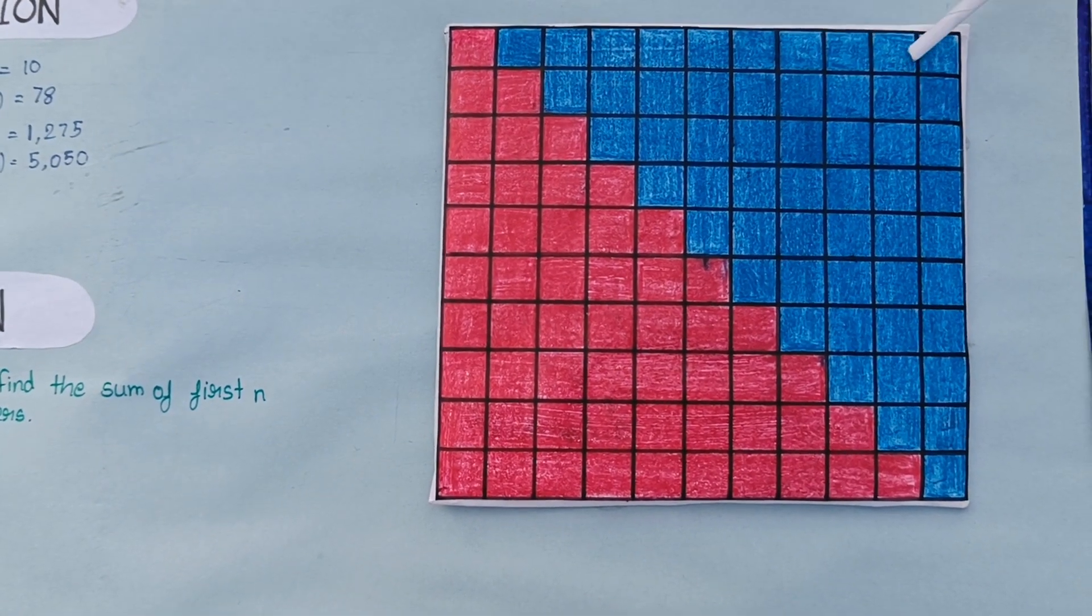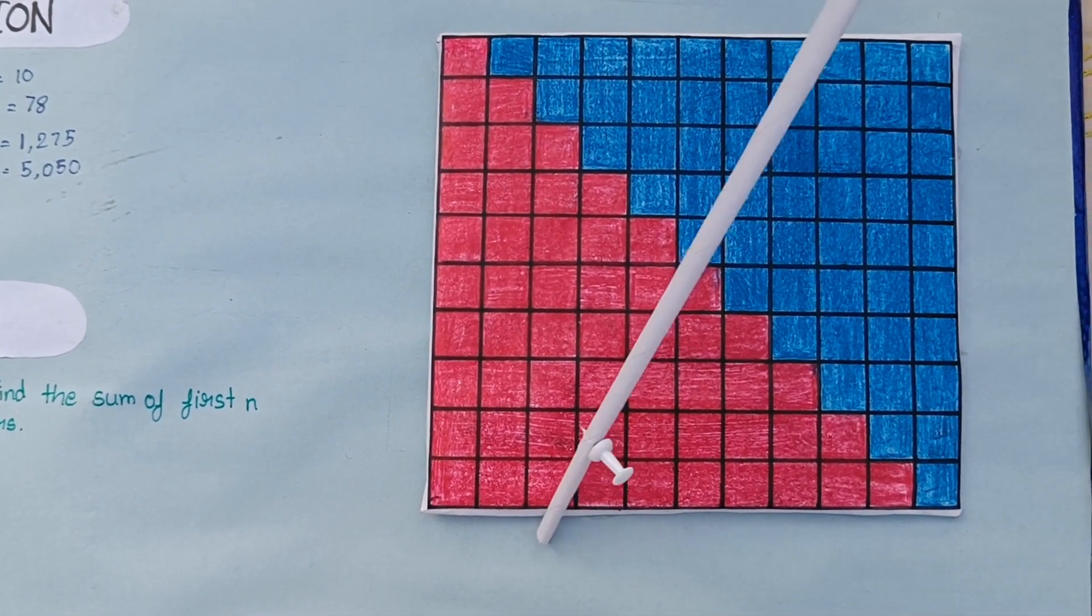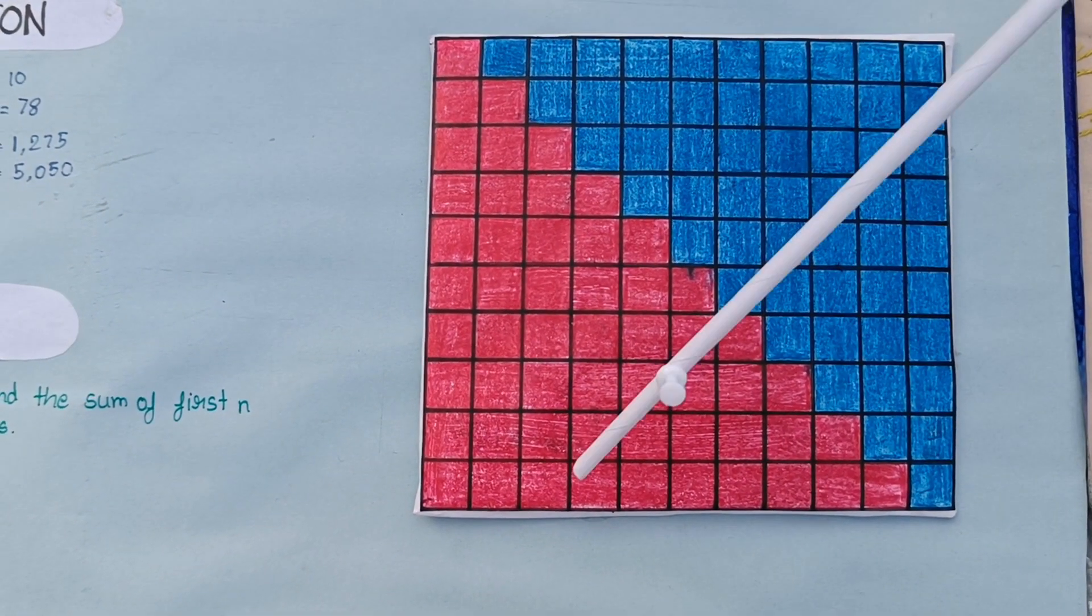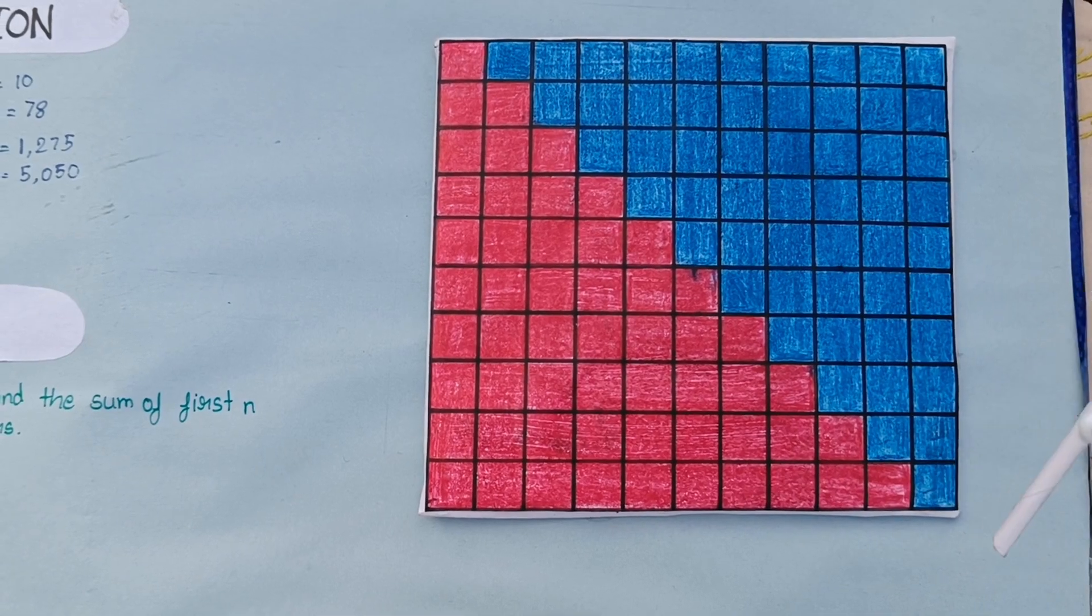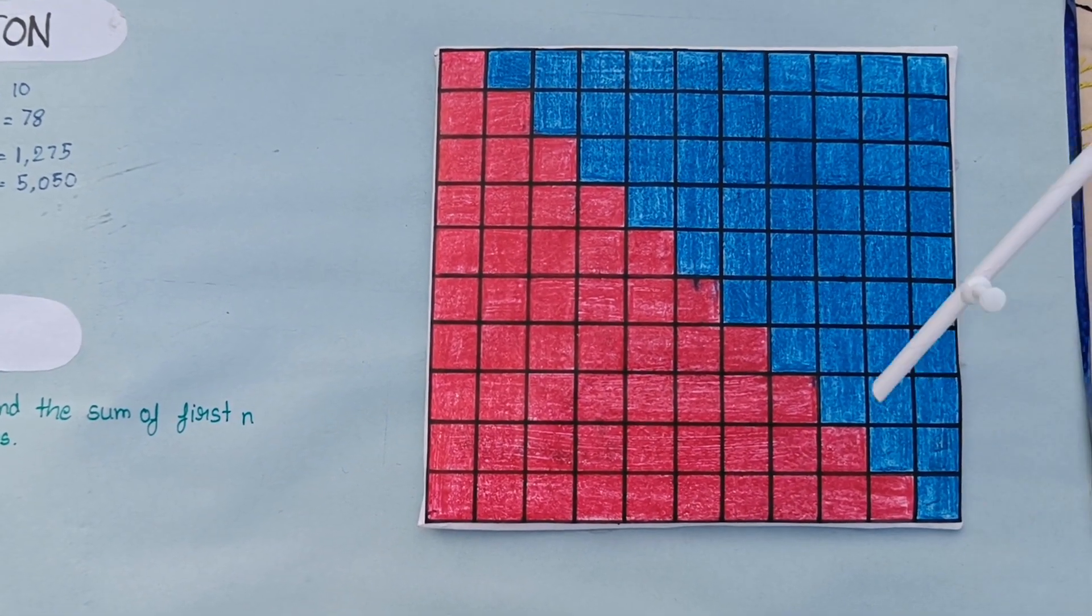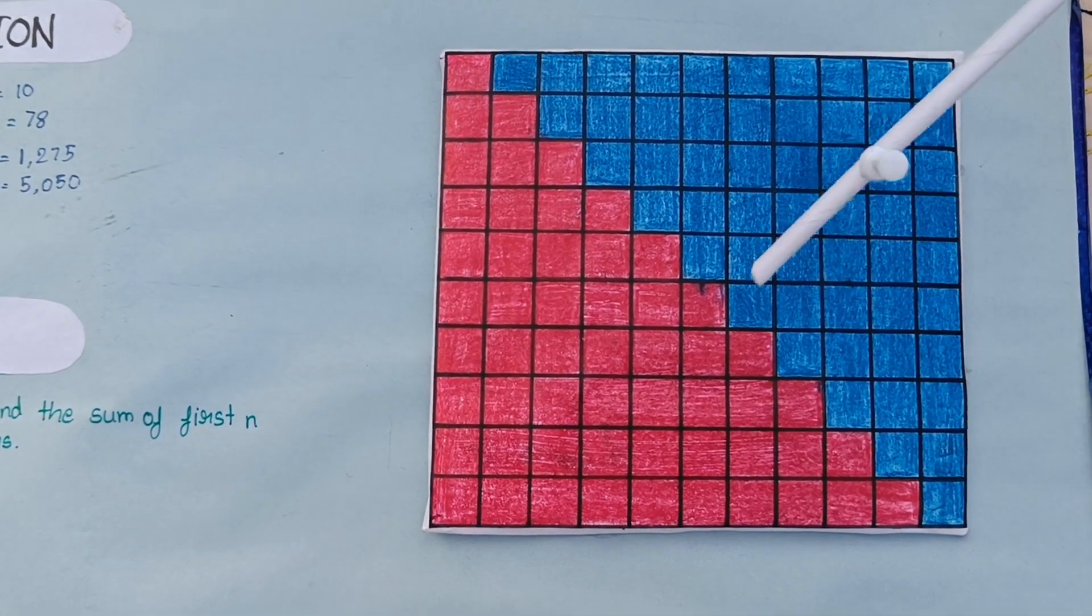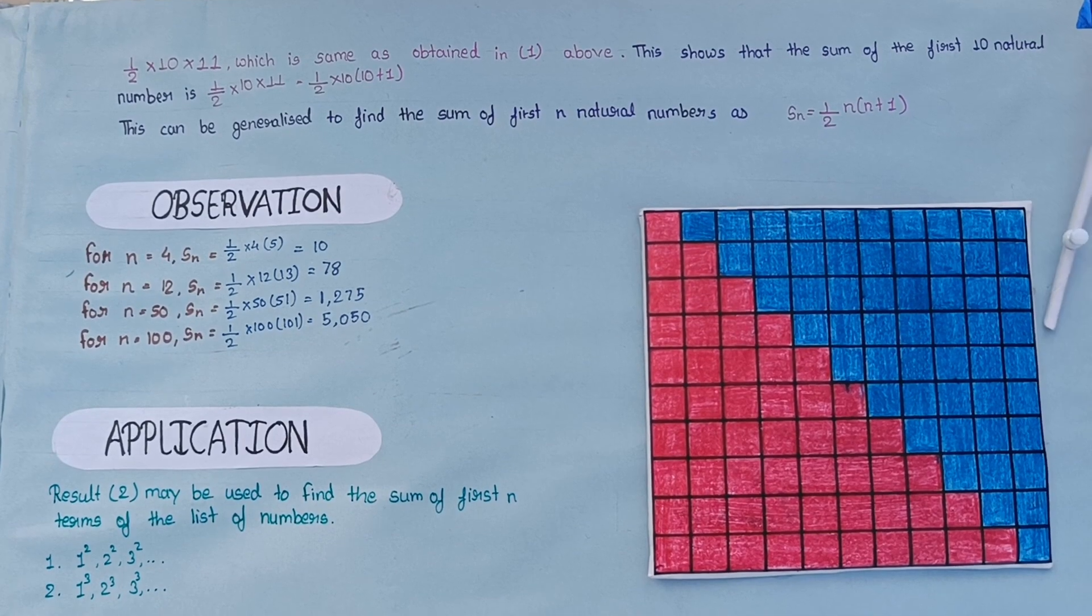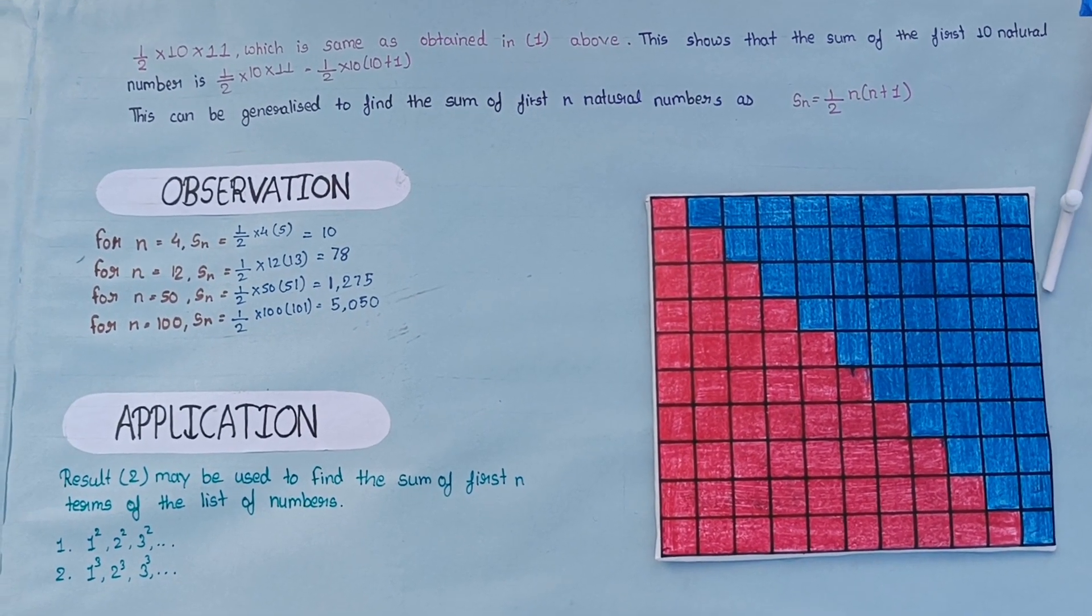We know that the area of rectangle is length into breadth. Length of this rectangle is 10 which is N and breadth is 11 which is N plus 1. So, area is equal to N into N plus 1, which means 10 into 10 plus 1, which gives 110.